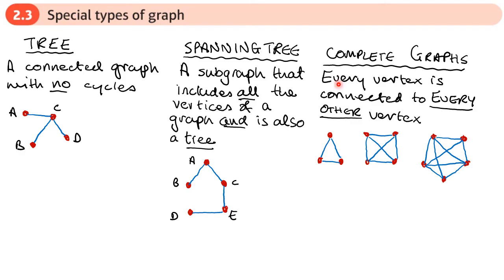So now we move on to complete graphs. And in a complete graph, every vertex is connected to every other vertex. So you can see some examples here. So three vertices, they're all connected to each other. So I can get to any other vertex from one vertex. It's the same if I've got four vertices, I can get to any other vertex straight away without having to go indirectly another route.